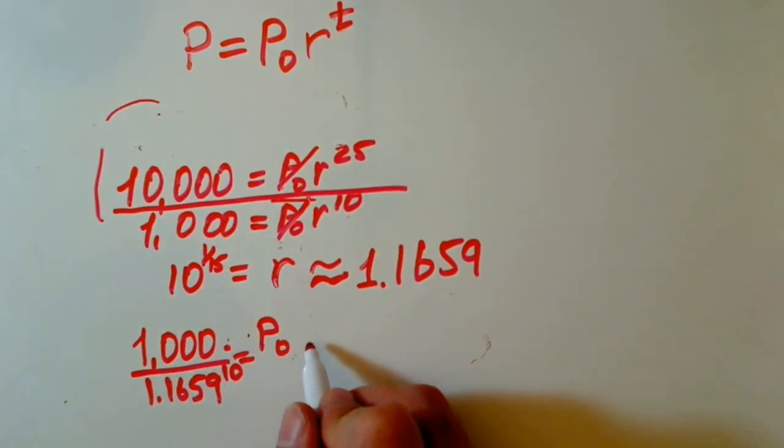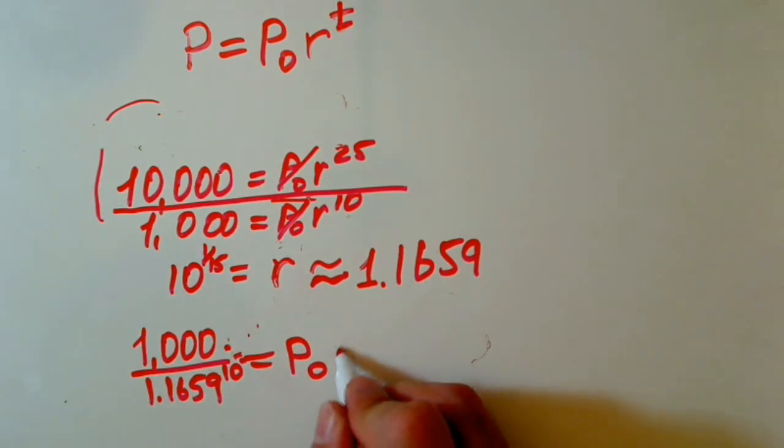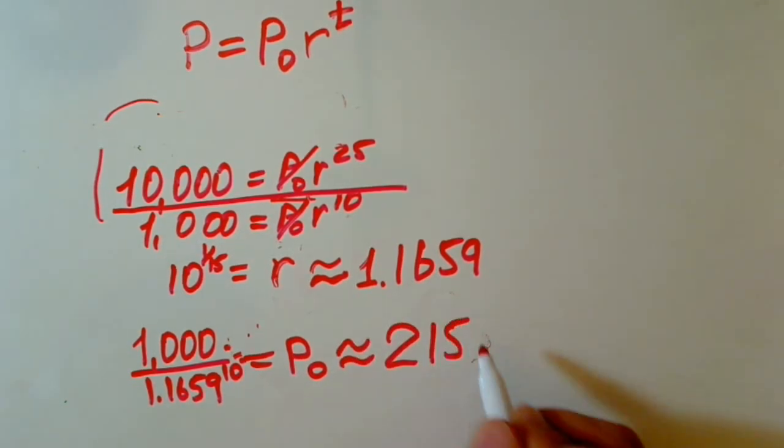It's actually approximately, let me write this, P initial will be approximately equals to 215, and some decimal places. We are talking about bacteria, that's why we are taking all integers.